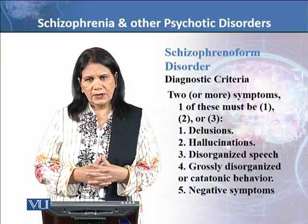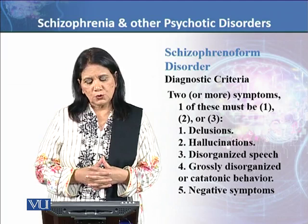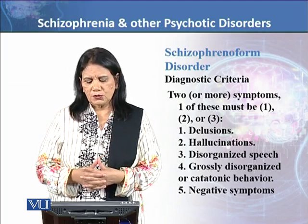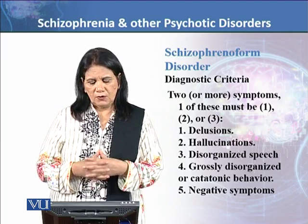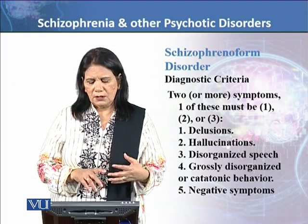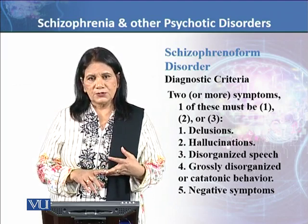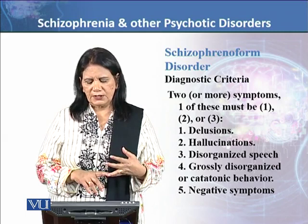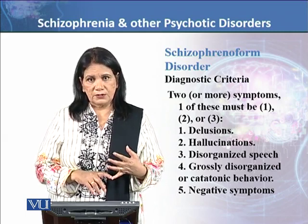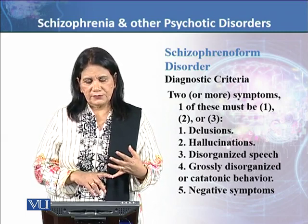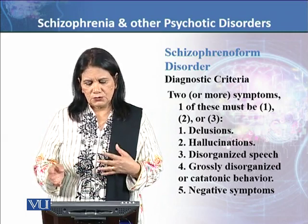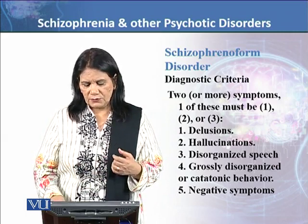The first parameter for schizophrenia is two or more symptoms, and one of those must be from the first three: delusions, hallucinations, or disorganized speech. The fourth is grossly disorganized or catatonic behavior, and the fifth is negative symptoms. This is the first criteria for schizophrenia.